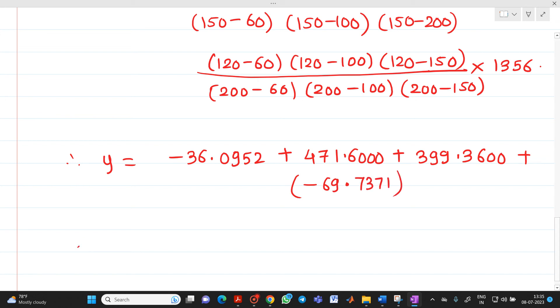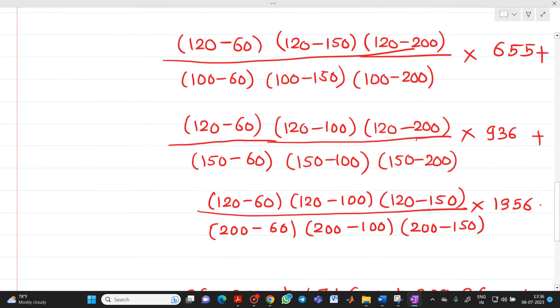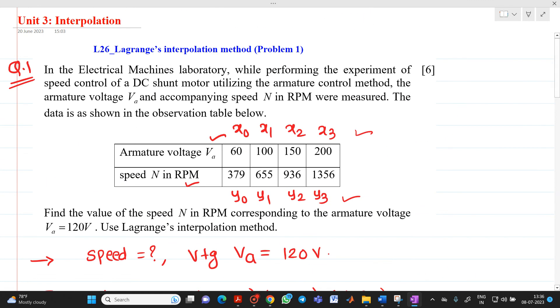You try to solve the usual terms, you will get this answer. So, Y of 120 will be equal to 765.1276. This will be your final answer. What this indicates? It indicates the value of speed N in RPM will be 765.1276 when your armature voltage VA is equal to 120 volts. So, this is the method with the help of which we can solve a numerical of Lagrangian interpolation.